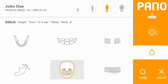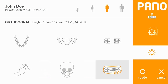The next option gives the two-dimensional sinus. To the right of that is the orthogonal panoramic option. In the orthogonal panoramic, the machine makes a slightly slower rotation around the patient's teeth and does not capture all of the TMJ in the image, but it does reduce some of the overlaps in the image.